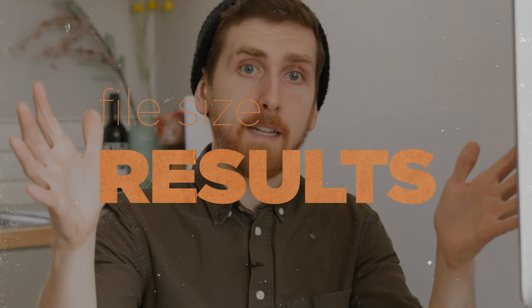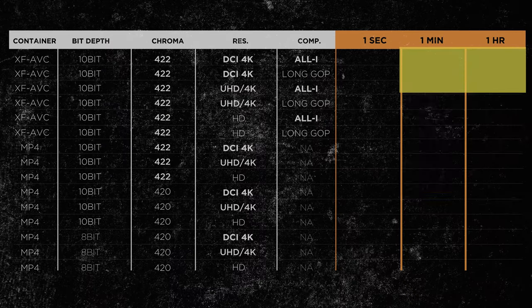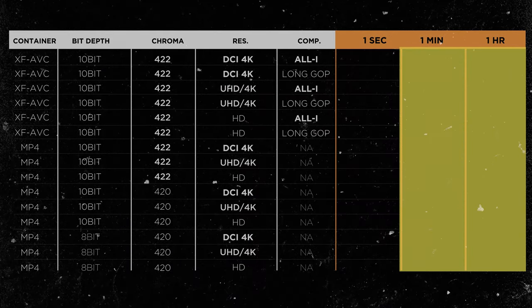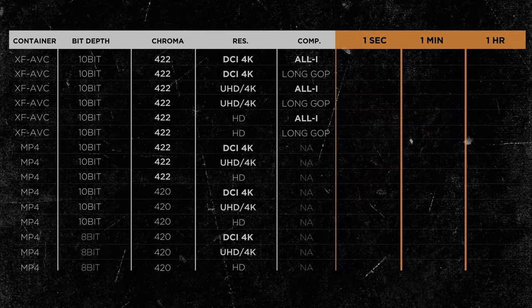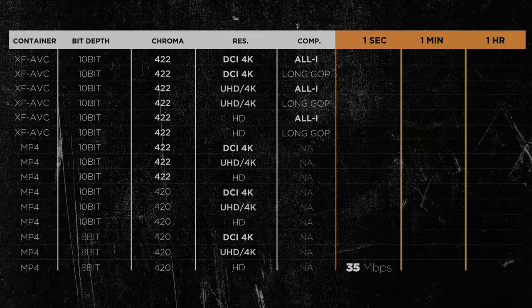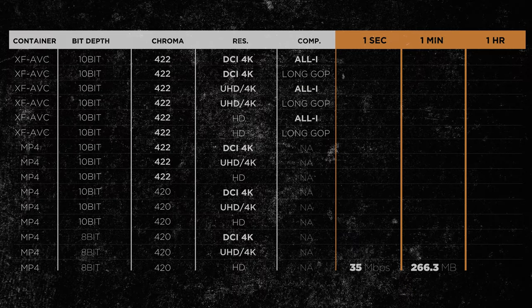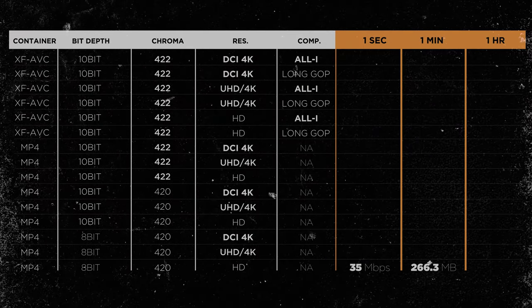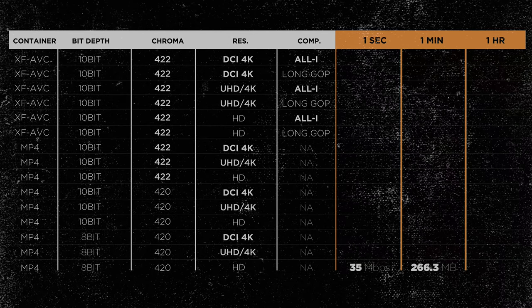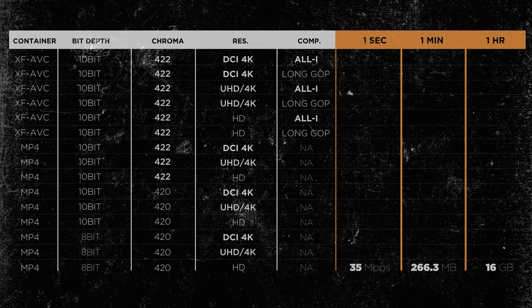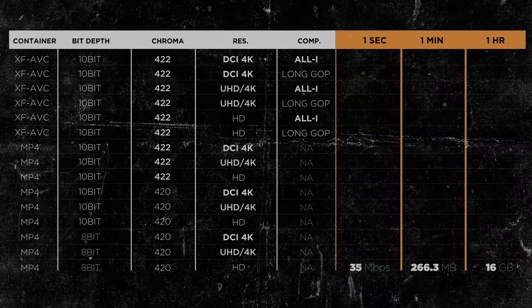And now the main event: file sizes. I already know the megabits per second on all of these settings, but I can't really quantify in my brain how much a megabit per second costs — whereas I understand how much a gig or a terabyte costs to fill up on a hard drive. That's why the second and third columns are here, so we can understand the file sizes in a more practical sense. Starting at the bottom: MP4, 8-bit, 420 HD records at 35 megabits a second. When I recorded for one minute in the real world, I recorded 266 megabytes. If I was to extrapolate that out for a small shoot, I would get about 16 gigs — that's the footprint I'm used to working with the C100 Mark II.